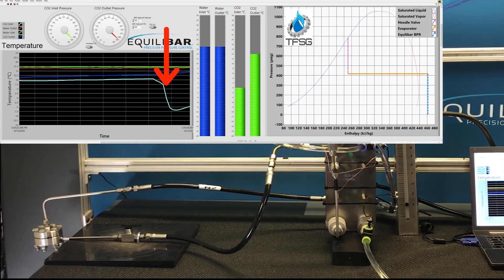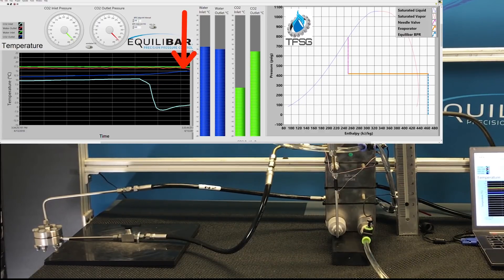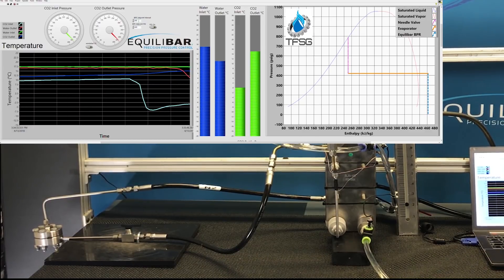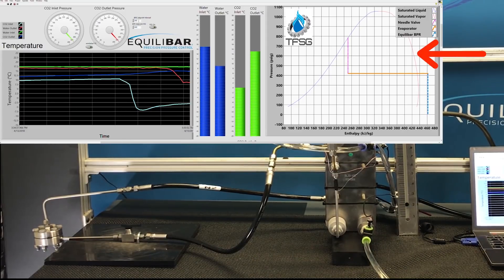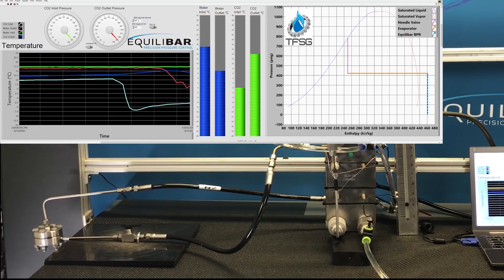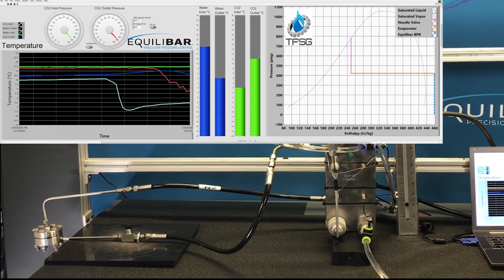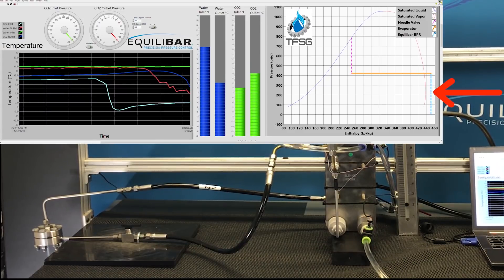The light blue line on the temperature plot represents the CO2 inlet temperature whereas the red line represents the heat load outlet temperature. The graphic on the right is a representation of the pressure versus enthalpy curve for CO2. The light red line represents the saturated vapor line and the solid orange line indicates evaporator pressure which is controlled by the Equilibar. The vertical blue dashed line represents the pressure drop across the Equilibar.